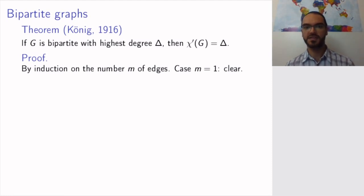Remember, 50 years later Vizing would prove that you need either Δ or Δ+1 for any simple graph, but for bipartite graphs, Δ is enough.